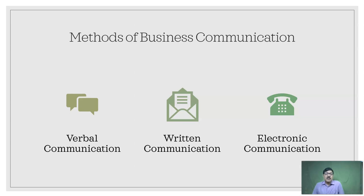In methods of business communication, you have verbal communication, written communication, and electronic communication, among others. Verbal communication is when one person transfers information to another person verbally — through a telephone message, a discussion, or a video conference. Written communication is when one person writes an email, a formal letter, or a poster to another person — this is the sender-and-receiver concept. Electronic communication, the fastest growing method, involves the sender sending information through emails, social media, text, blogs, or websites.